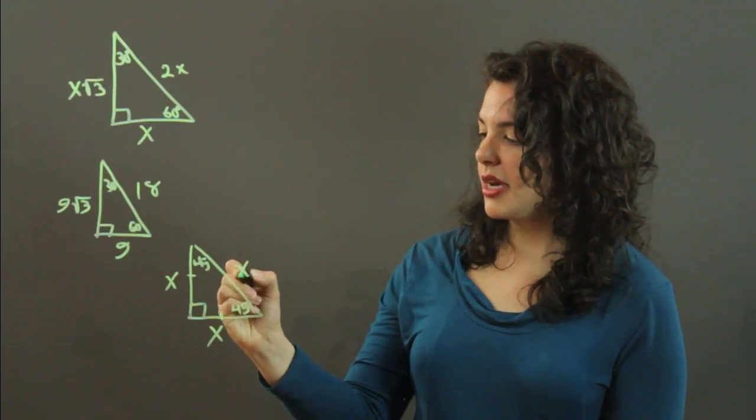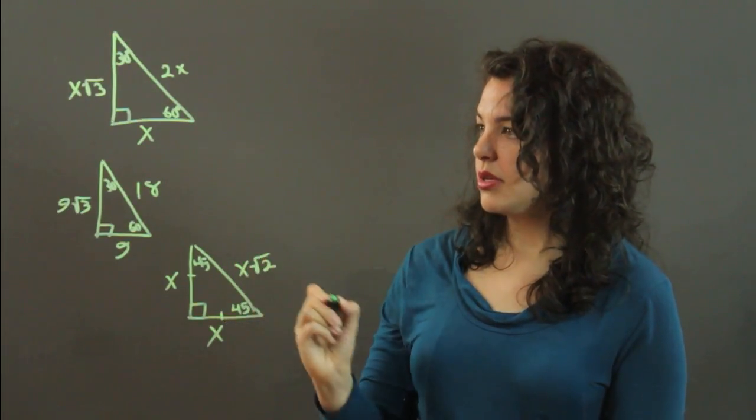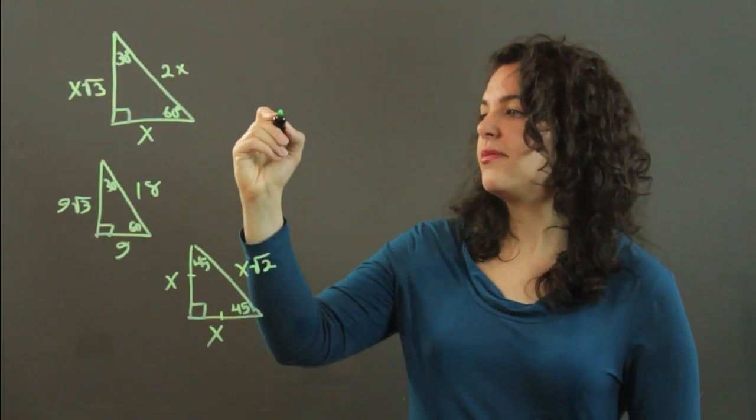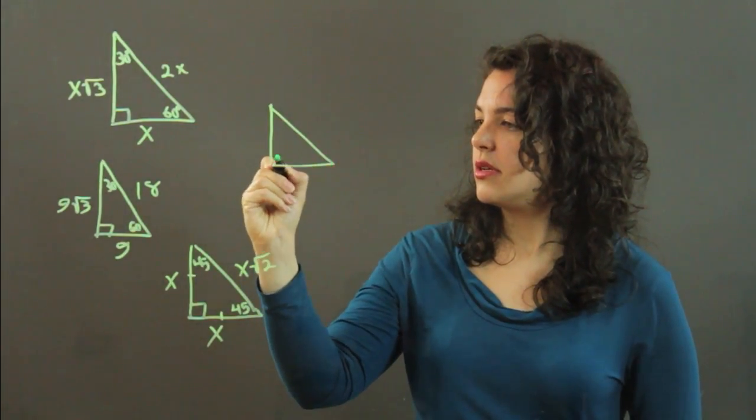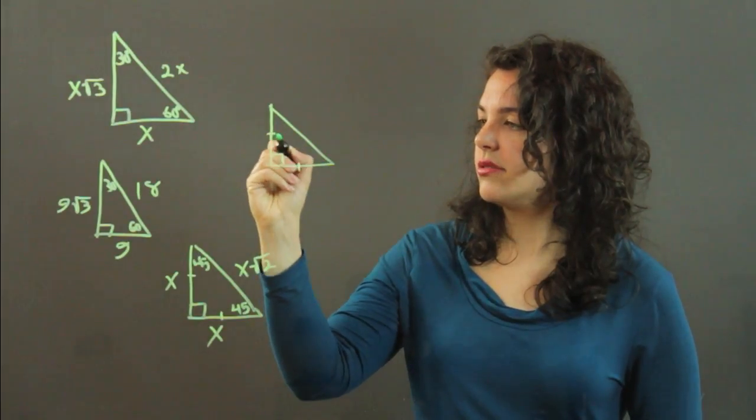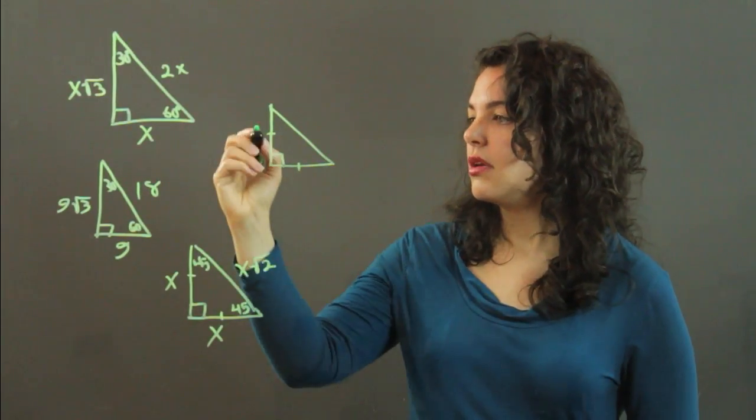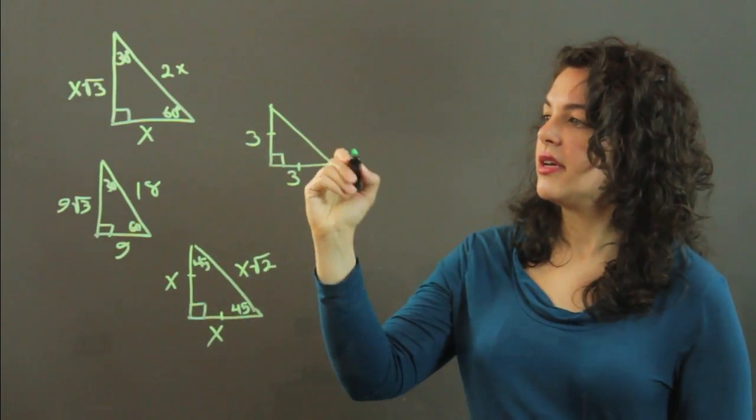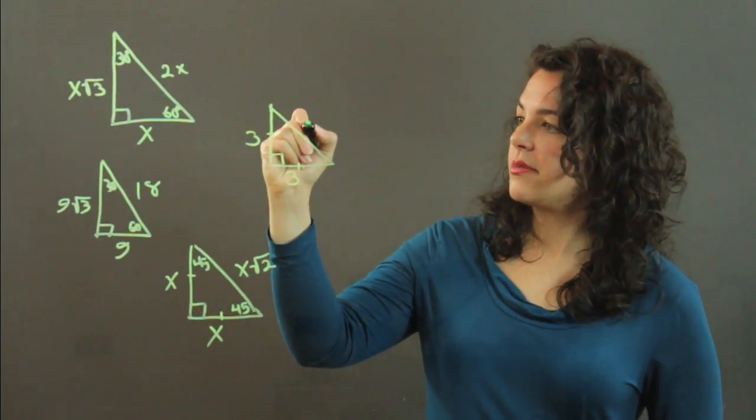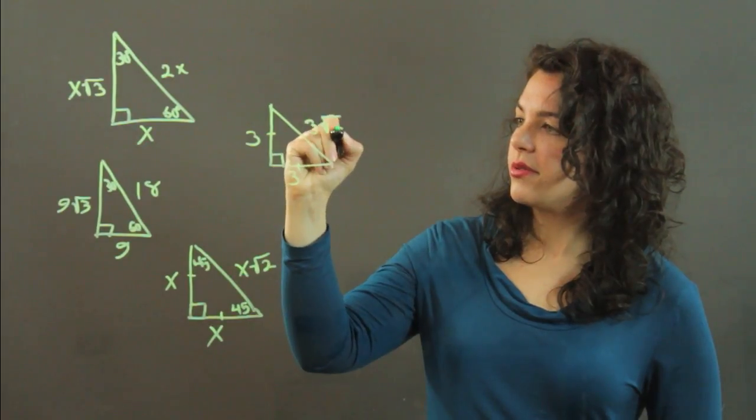So, take for an example, any 90 degree isosceles triangle with sides 3, legs 3. The hypotenuse is going to be 3 root 2.